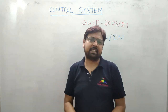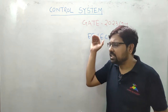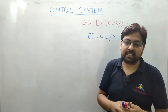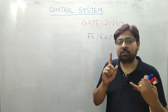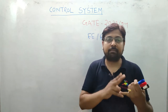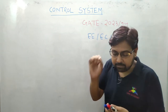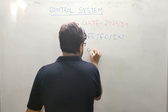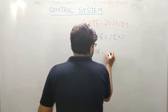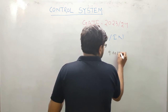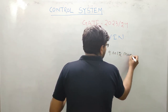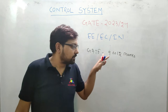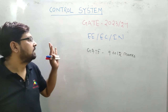जैसे हम Network Theory में बात कर रहे थे, Network Theory के जैसा Control System भी उतना ही weightage लेके आता है. तीनों branch के लिए Network Theory मेरा 10 से 12 mark लेके आता है GATE के लिए. Same यहाँ पर Control System में, GATE के लिए यह मेरा 9 से 12 mark का weightage है. तो लगभग same weightage लेके आता है - 9 से 12 mark. यह हो गया weightage for GATE exam.